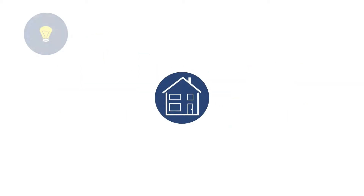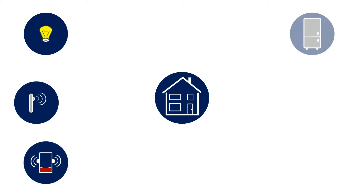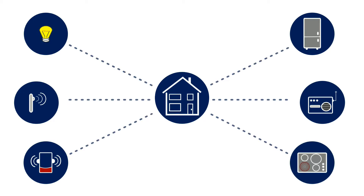In line with the rapid growth of machine-to-machine industrial devices, the average home is gaining an increasing number of intelligent consumer devices. While these devices are categorized under the banner of the Internet of Things, to date they haven't settled on common protocols or interfaces.